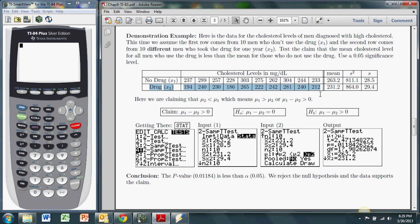So in this test, we're claiming that the mean cholesterol level in all men who don't take the drug is going to be greater than the mean cholesterol level for all men who do take the drug. So we're basically claiming that mu 1 minus mu 2 is greater than zero. Now that we've got everything started, we go over to our calculator here.